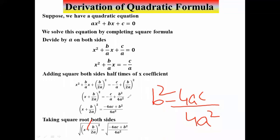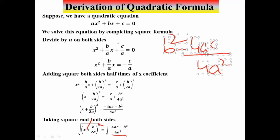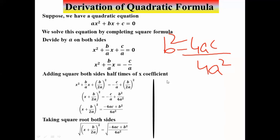Taking the square root cancels the square on the left side. On the right side, √(4a²) becomes 2a, so we have x + b/2a = √(b² - 4ac) / 2a.